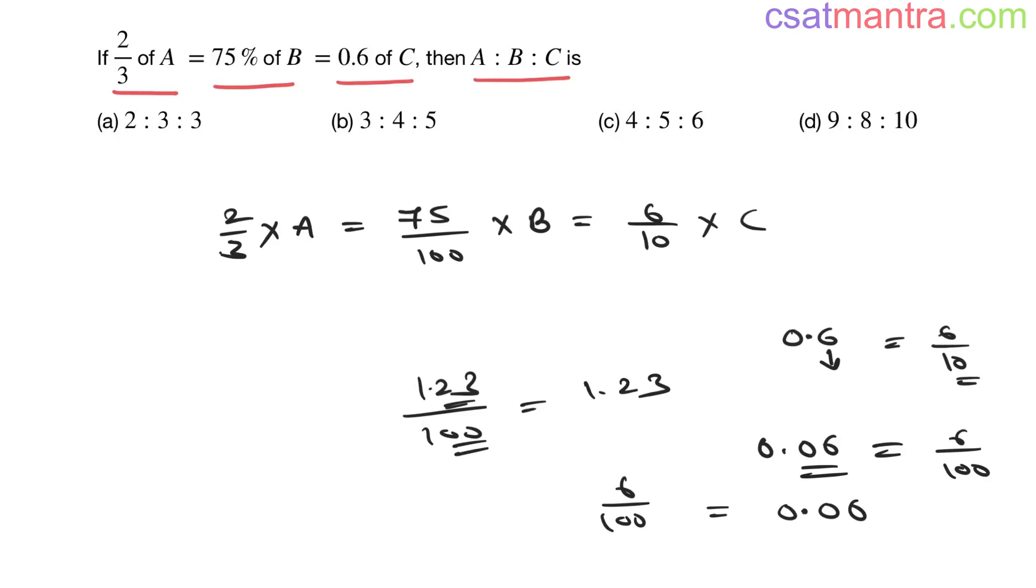1 zero is there, after decimal you would be having 1 digit. 6.4, 5, 7, 6 by 10. If it is 100 it would be 45.76. If it is 1000 you would be having 4.576.